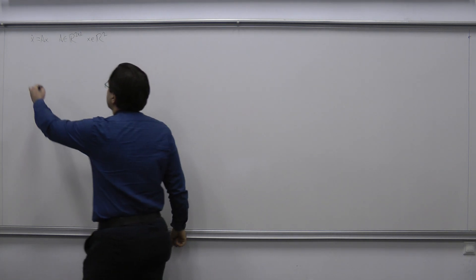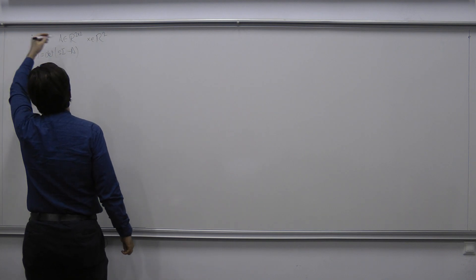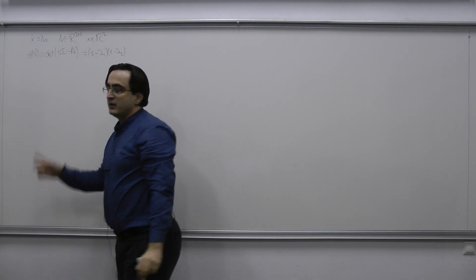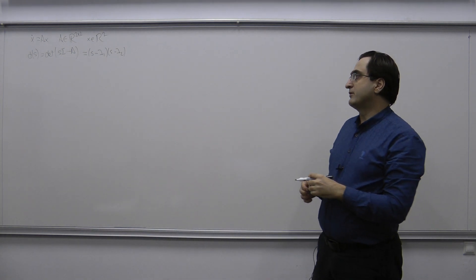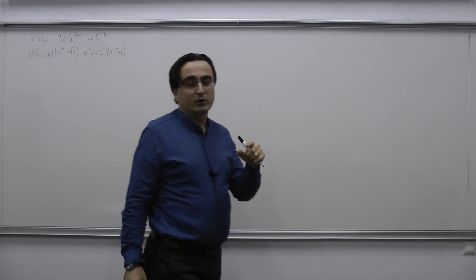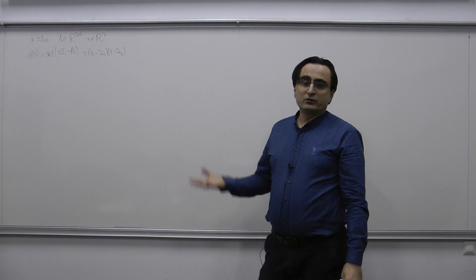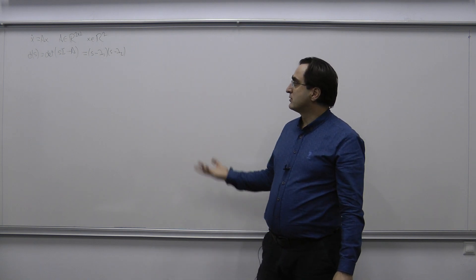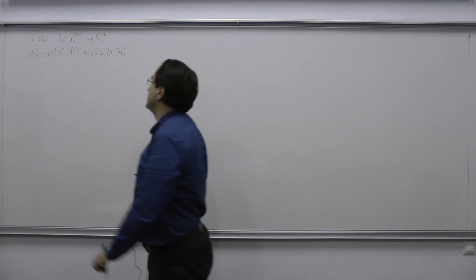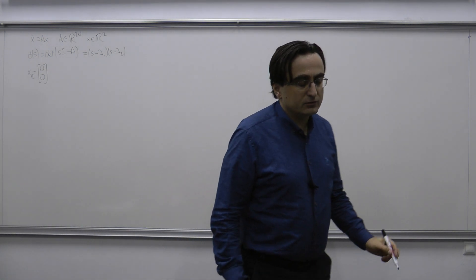The first thing we do is calculate the eigenvalues. D(s) is the determinant of sI minus A — the characteristic polynomial — given as (s minus λ₁)(s minus λ₂). Depending on these eigenvalues we can classify the equilibrium points. There is an implicit assumption of a single equilibrium point; if the whole state space is in equilibrium we don't classify those. We assume determinant of A is not equal to zero.